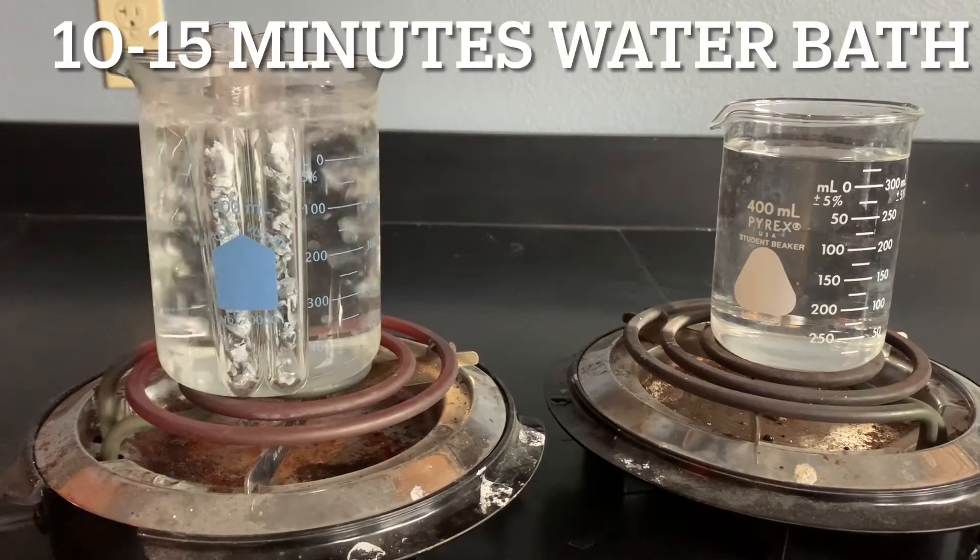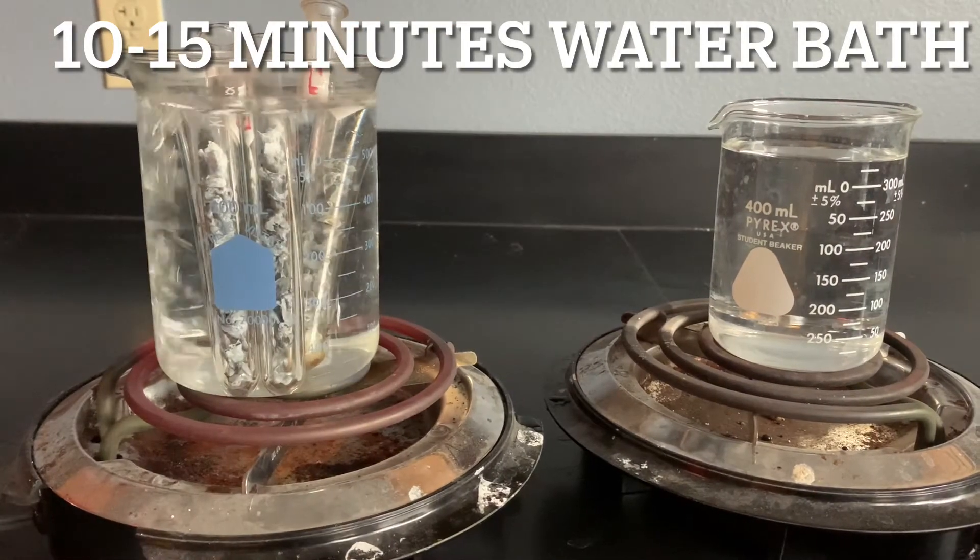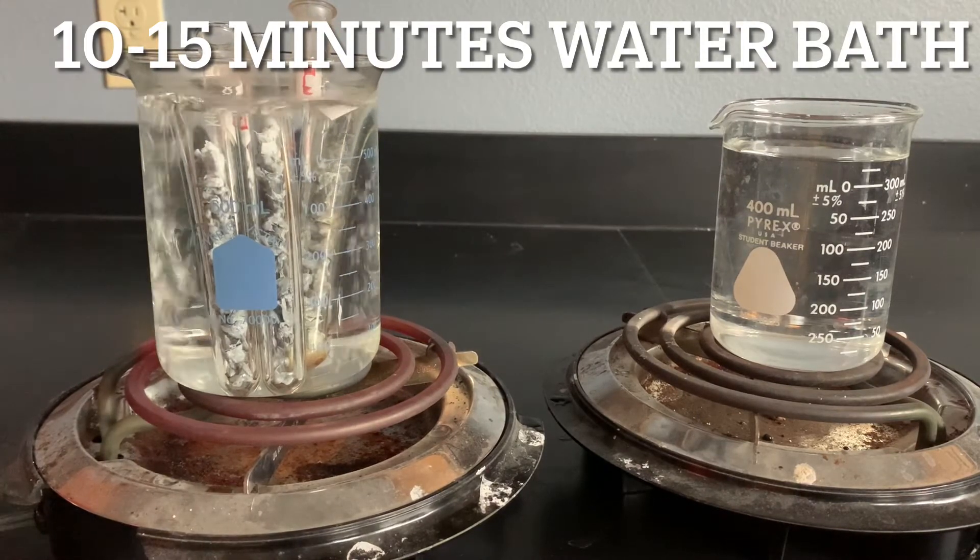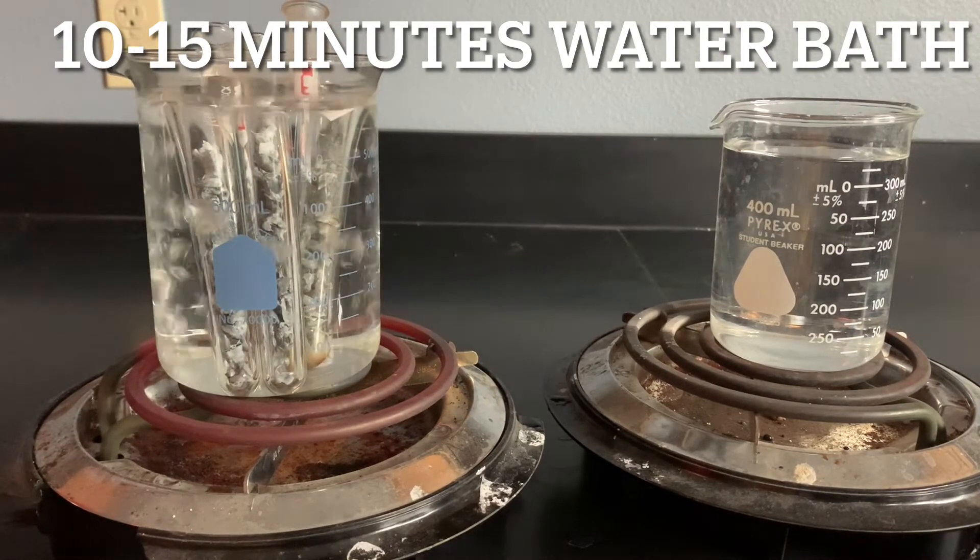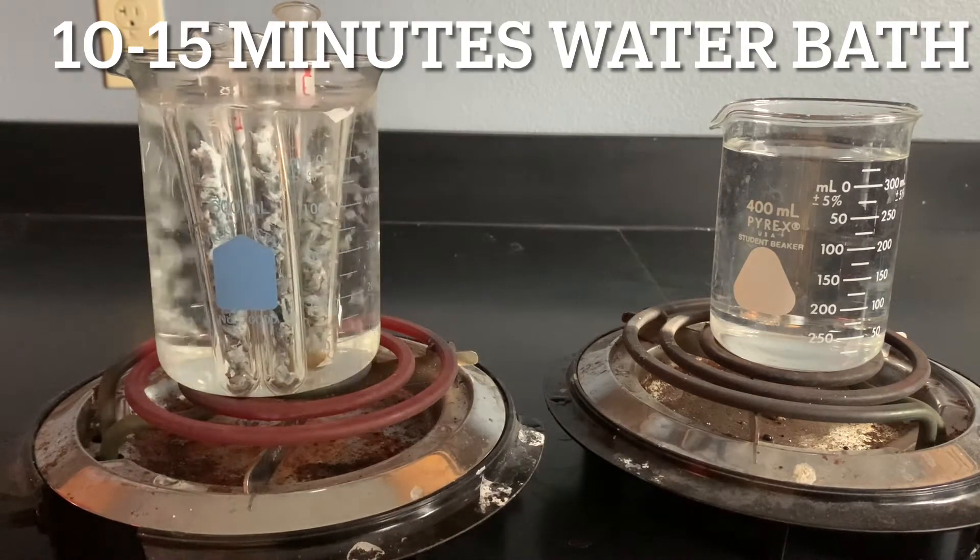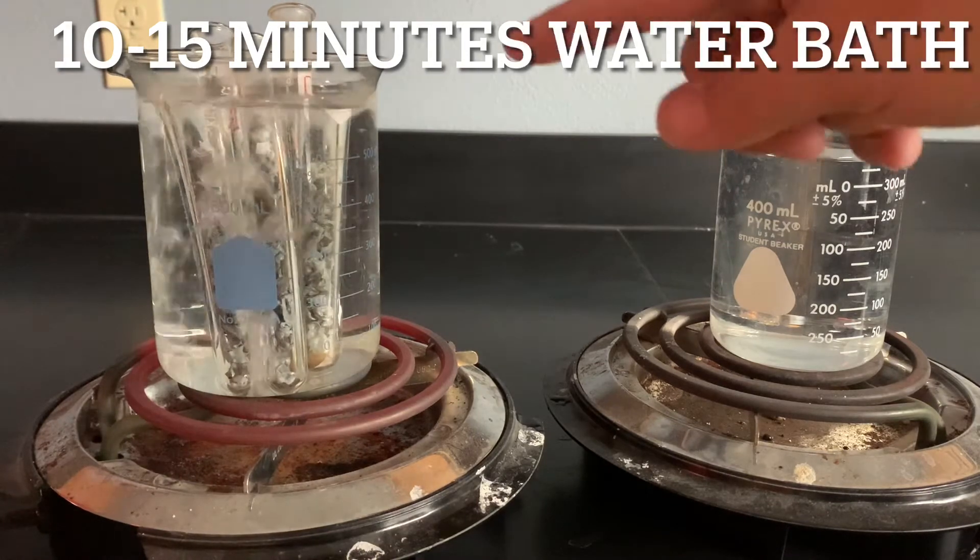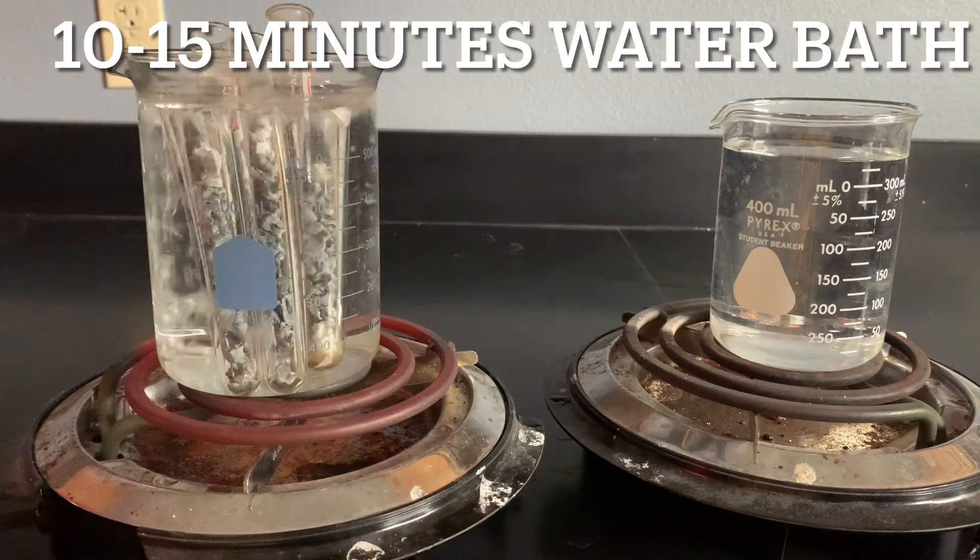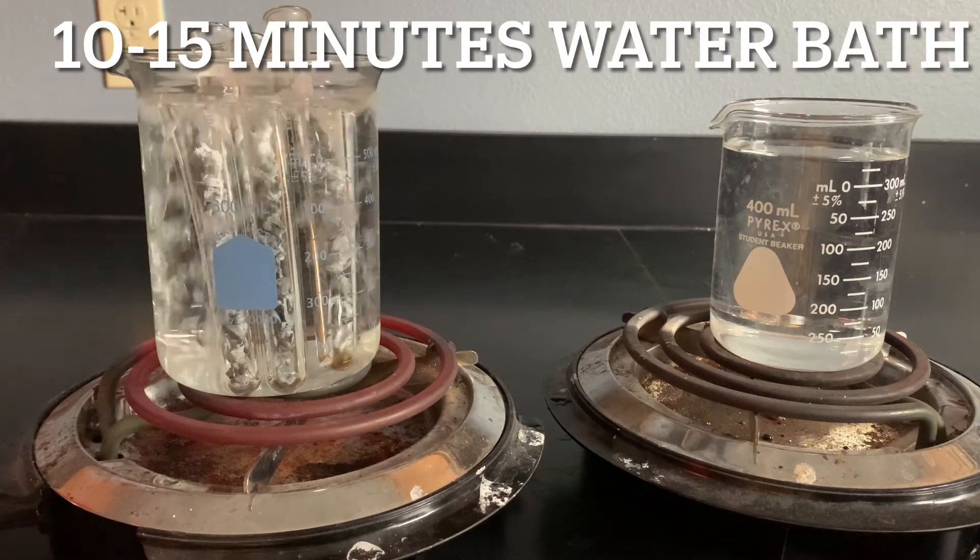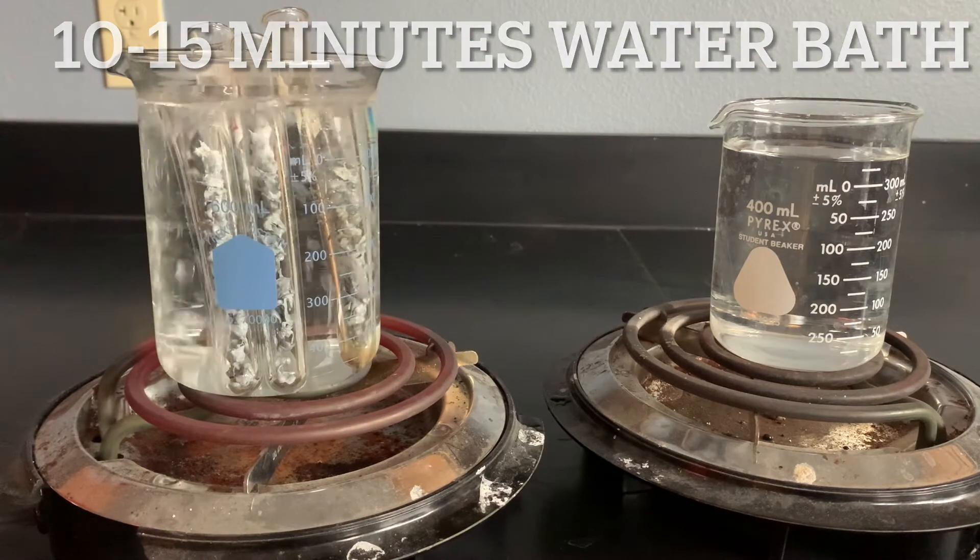Now we're going to place our labeled test tubes into our water bath and we're going to allow it to heat up for about 10 to 15 minutes. I have all three in my water bath. I also have a second hot plate going that has some additional water. In case I evaporate too much water off here, I can simply put in warm water or boiling water and I'm not losing too much time.